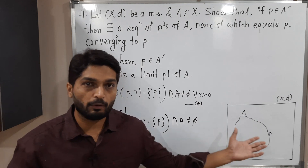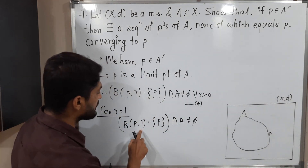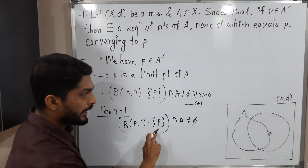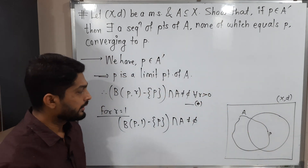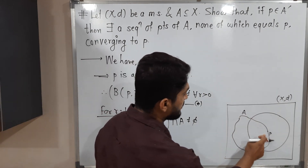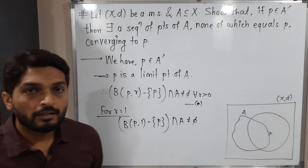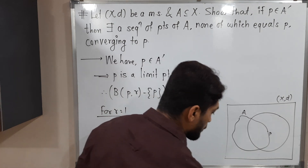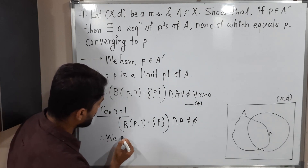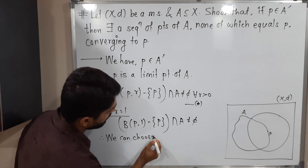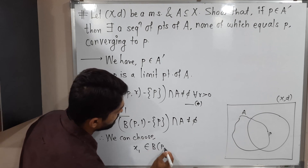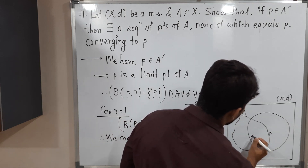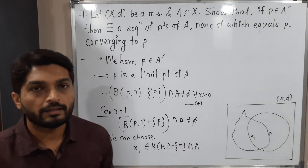Let us understand with the help of a diagram. We are considering a ball with center P and radius 1. We are removing the center P from that ball, and then the intersection with A is non-empty — you can easily see in the diagram that many points are there. Since the intersection is non-empty, we can definitely select one of them. So we can choose X1 belonging to B(P, 1) minus singleton {P}, intersection A.